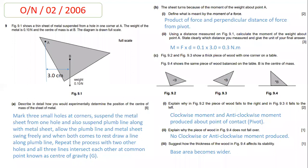Suspend the lamina along with the plumb line from one hole. Allow the lamina and plumb line to swing freely — there is no need to stop them with your fingers. When they both come to rest, draw a line along the plumb line. Then take out the lamina and plumb line from that hole and suspend from another hole, repeating the same process. Repeat from the third hole. All three lines will intersect at a common point, which is the center of gravity.